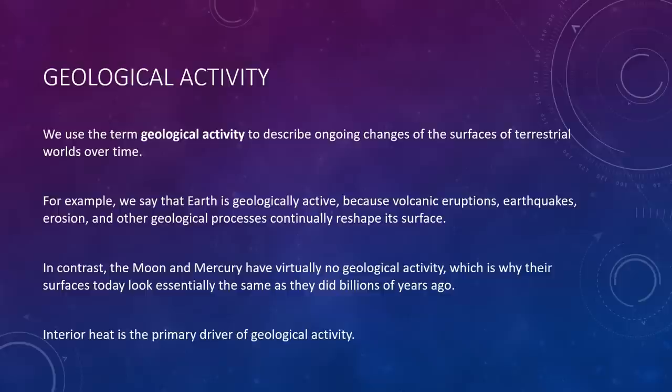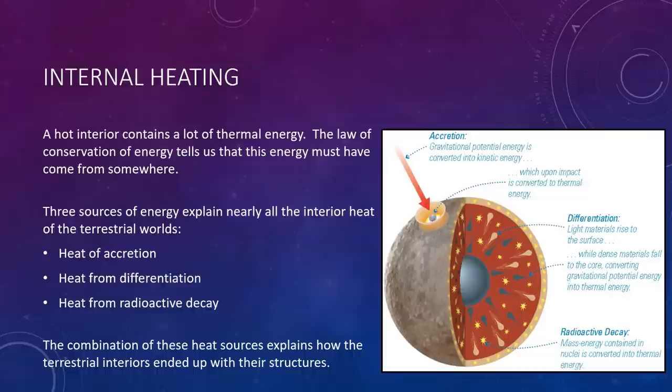Before we get into the details of that, let's take a look at both of these types of processes: the heating processes first, and then we'll look at how planets cool. A hot interior contains a lot of thermal energy, and the law of conservation of energy tells us that this energy must come from somewhere. Although you might first guess that the Sun would be the heat source, this is not the case. Sunlight is the primary heat source for the surfaces of the terrestrial planets, but virtually none of its solar energy penetrates more than a few meters into the ground. Internal heating is a product of the planets themselves, not of the Sun.